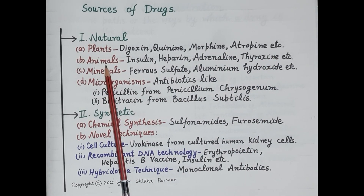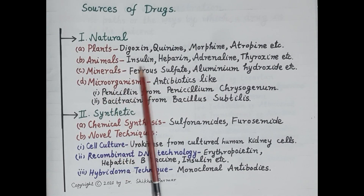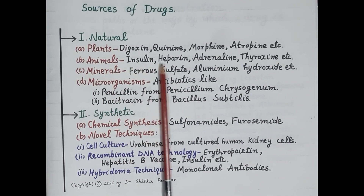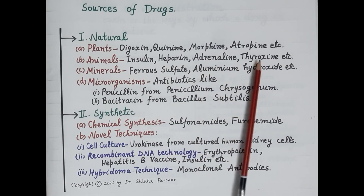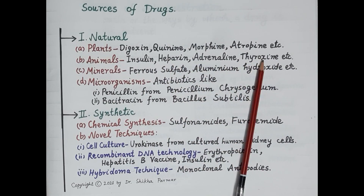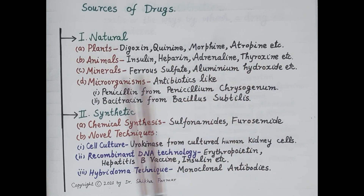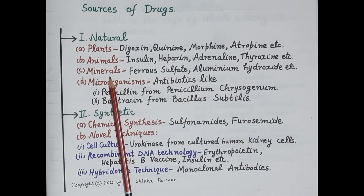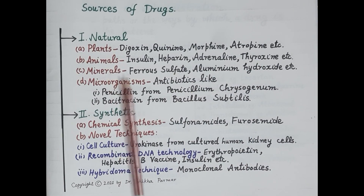The second natural source of drugs is animals. Many drugs have been derived from animals — for example, insulin, heparin, adrenalin, thyroxin. These are all derived from animals. The third natural source of drugs is the mineral source.